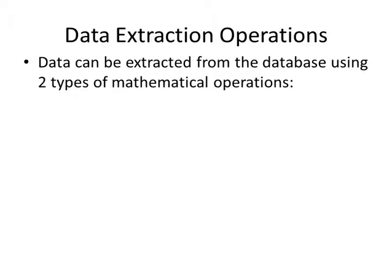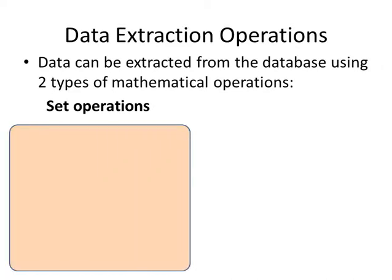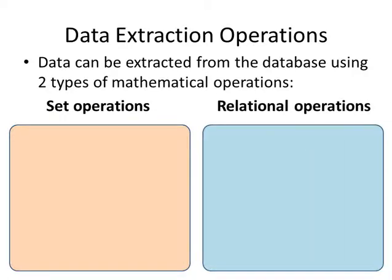Data extraction operations is basically talking about how we can get the information from the database. These are usually performed using some mathematical operations. There are two types of mathematical operations we can use: the first type is the set operations, and the second type is the relational operations.